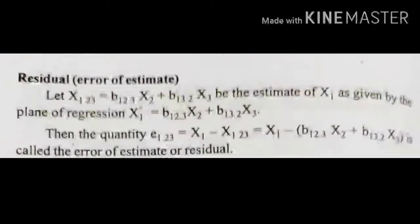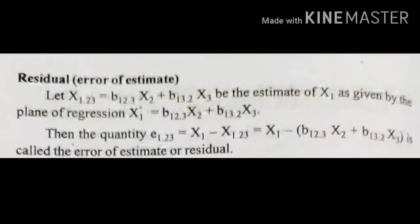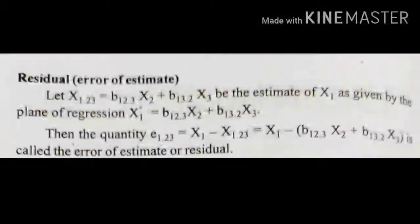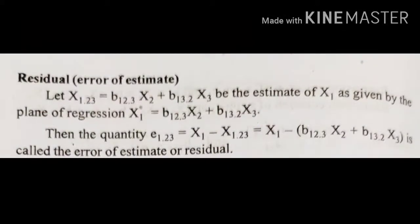Residual or Error of Estimate: Let x̂₁.₂₃ equal to b₁₂.₃x₂ plus b₁₃.₂x₃ be the estimate of x₁ as given by the plane of regression x₁ equal to b₁₂.₃x₂ plus b₁₃.₂x₃. Then the quantity e₁.₂₃ equal to x₁ minus x̂₁.₂₃, equal to x₁ minus (b₁₂.₃x₂ plus b₁₃.₂x₃), is called the Error of Estimate or Residual.